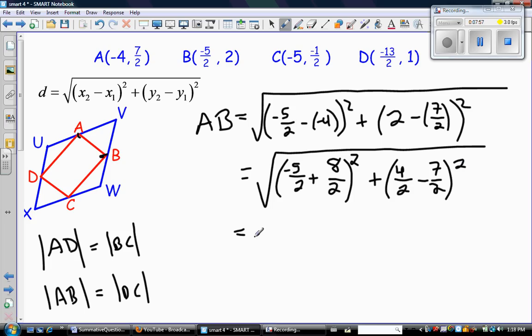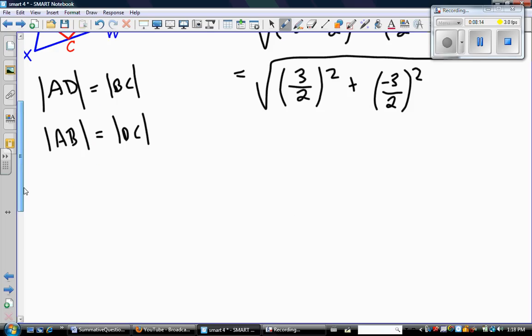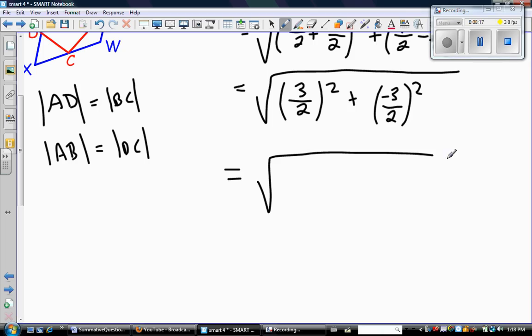So now I can do the addition here. I know the denominator is 2. Negative 5 plus 8 is 3 over 2. Here, again, denominator 2. 4 take away 7 is negative 3 over 2. And I can square it. So now that I've dealt with B in BEDMAS, I've dealt with the brackets. Now I can do this exponent. So 3 squared is 9. 2 squared is 4. Negative 3 squared is 9. 2 squared is 4. Now I'm finally ready to add. 9 plus 9 is 18. And the denominator is 4.